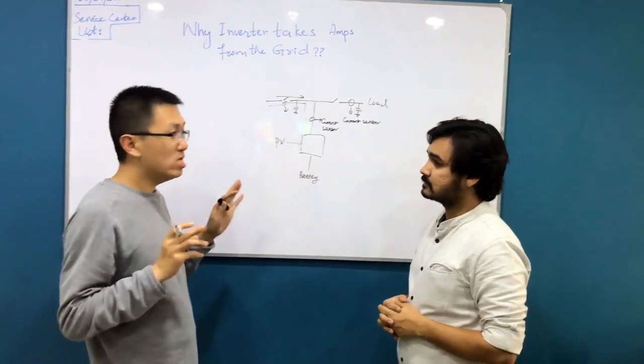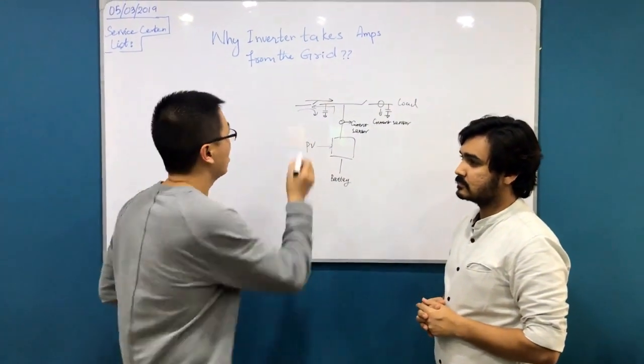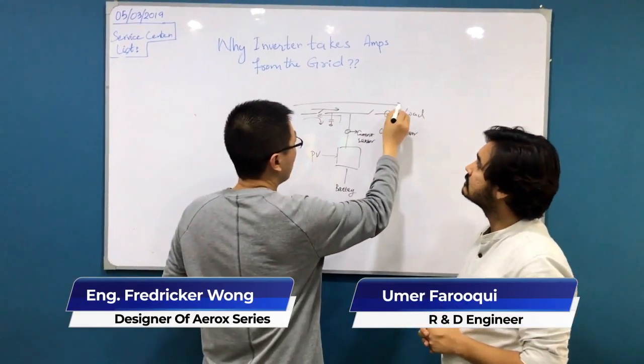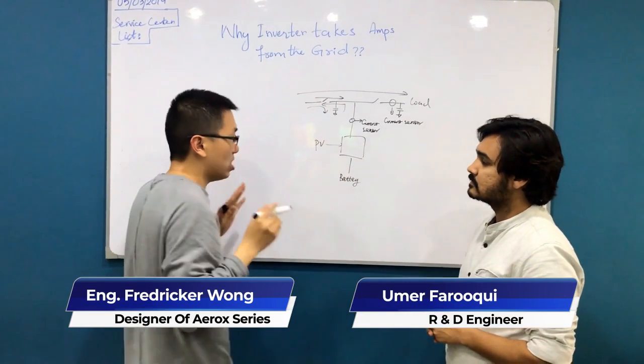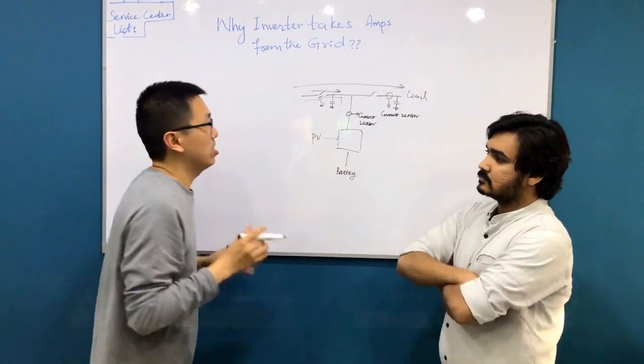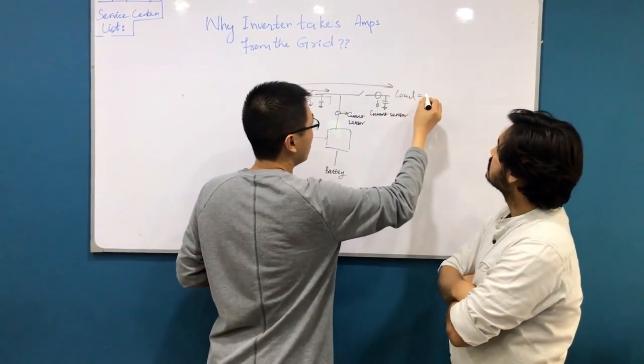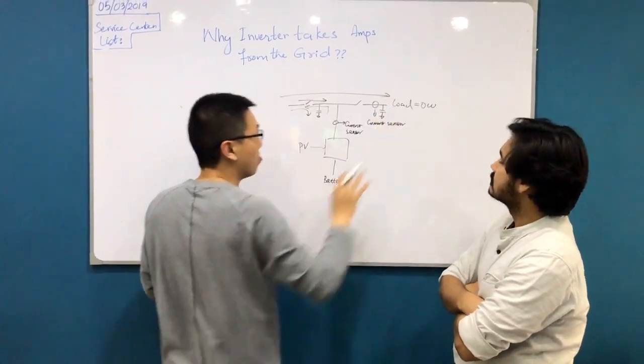When the inverter is working in grid bypass mode, the grid will go to the node directly. In this case, even the node is zero. No node at all.